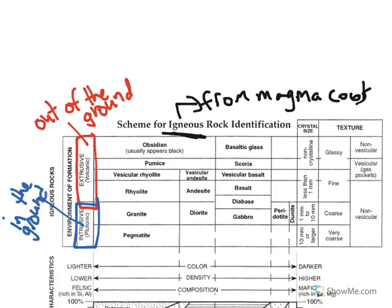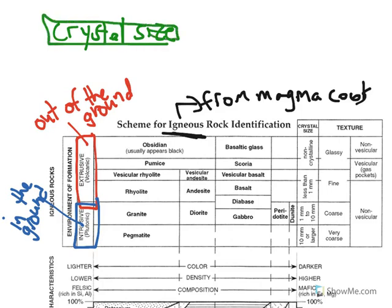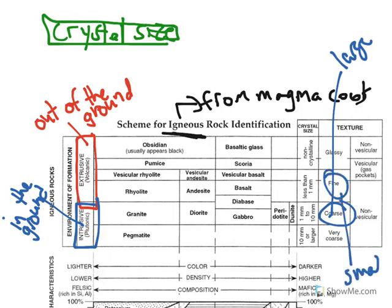Now, why this is important — how this manifests itself — is in the crystal size. One of the key features of igneous rocks is that it has crystals. Sometimes the crystals are super small that you can't even see them, so small that it looks glassy like obsidian. Other times, the crystal sizes are very coarse or very large. The word coarse means large; the word fine means very small, so small that it's tough to see the crystals.